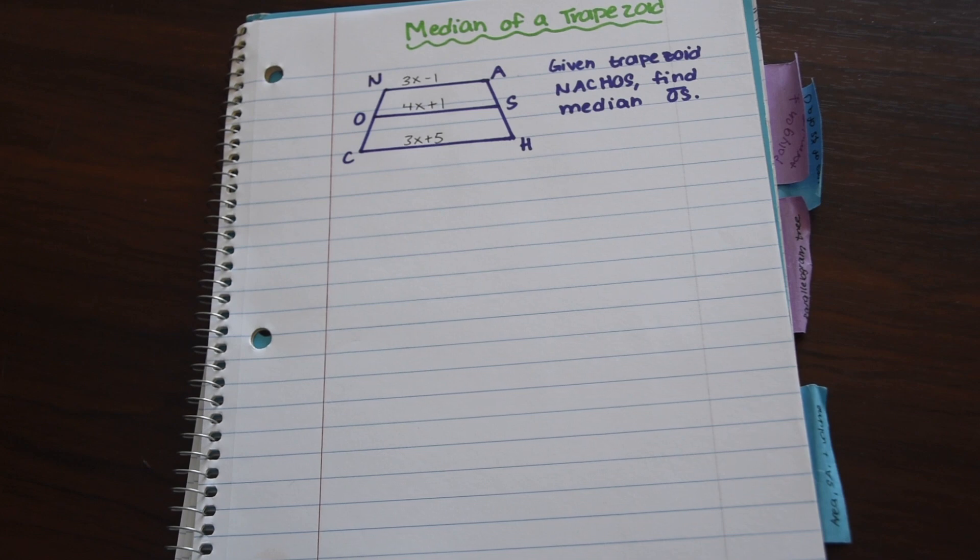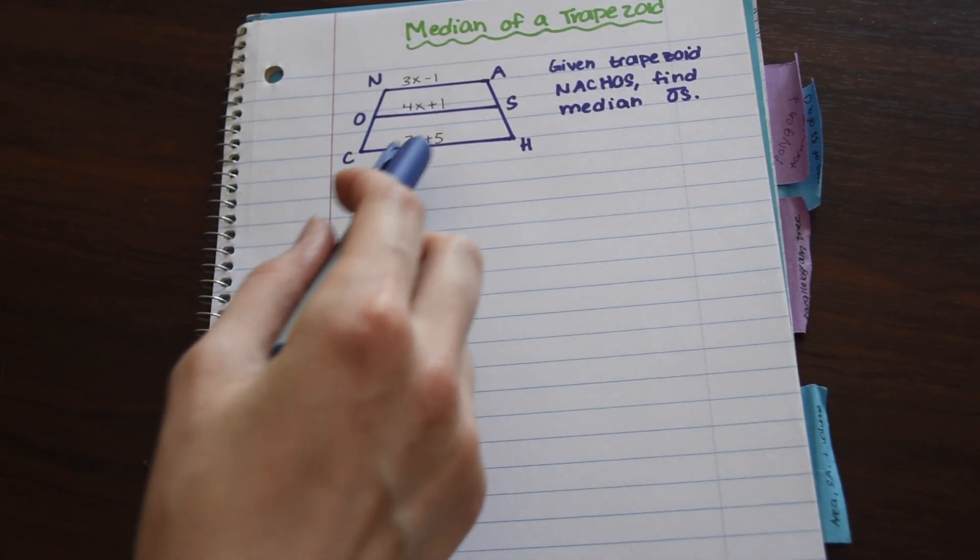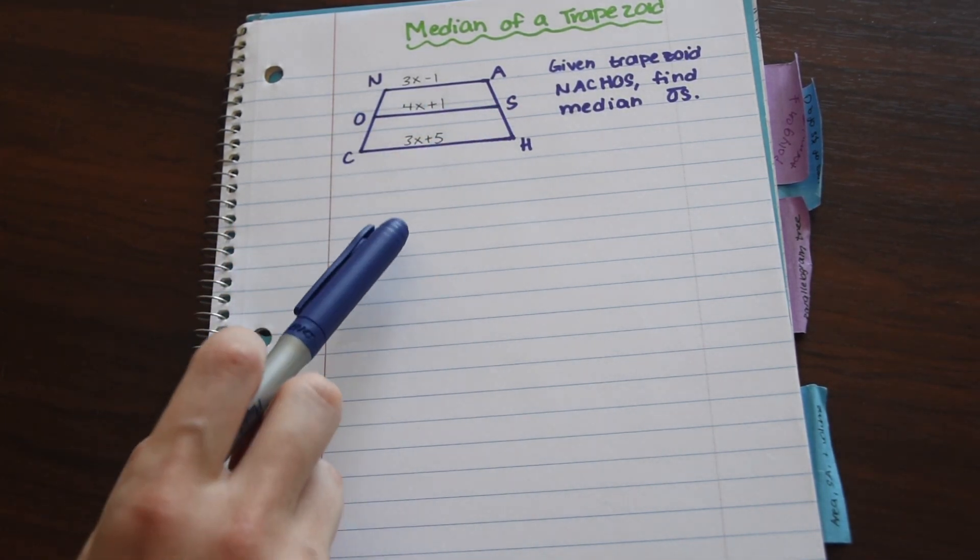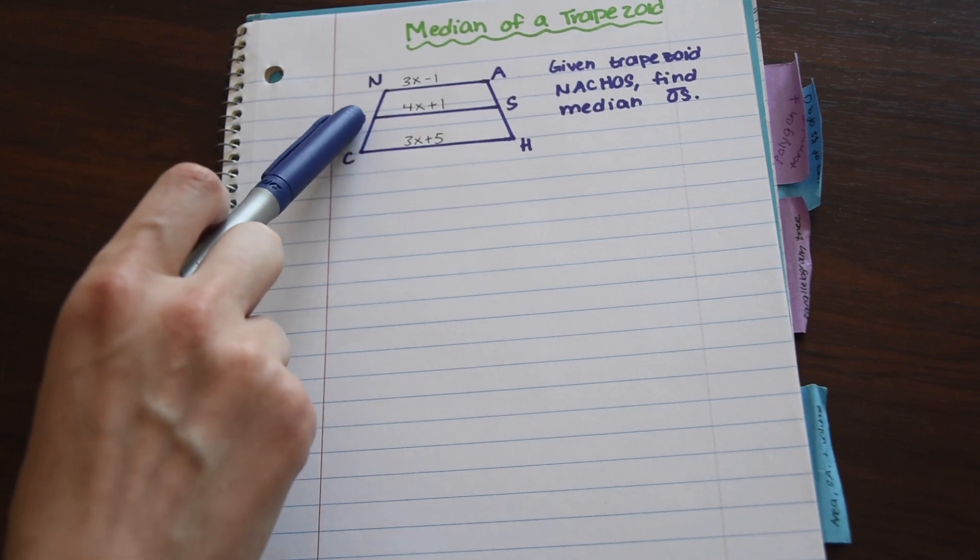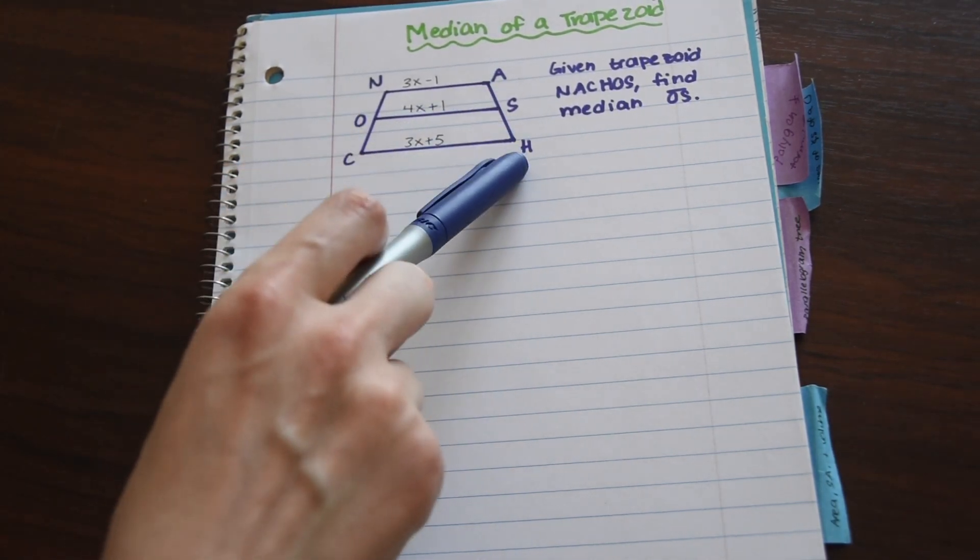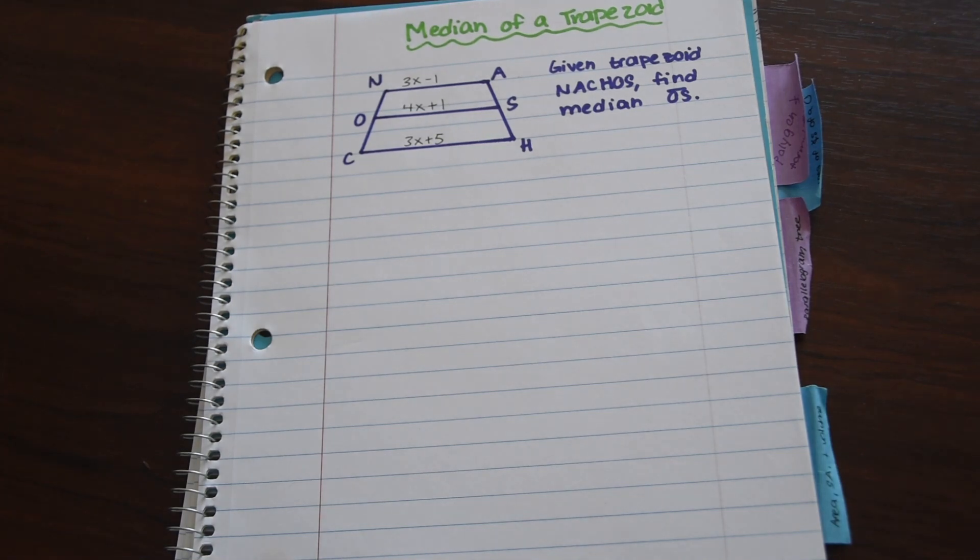And just a little reminder about what a median is, it's a segment that connects the two midpoints together. So O is the midpoint of NC, S is the midpoint of AH, and then we just connected these two lines together.